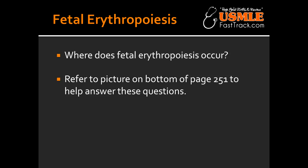What are the subunits of fetal hemoglobin? The subunits of fetal hemoglobin are 2-alpha and 2-gamma. What are the subunits of adult hemoglobin? The subunits of adult hemoglobin are 2-alpha and 2-beta.